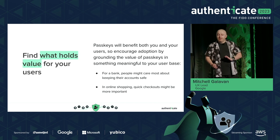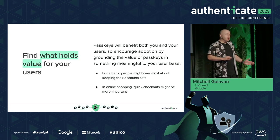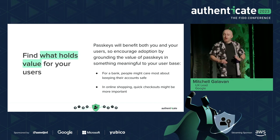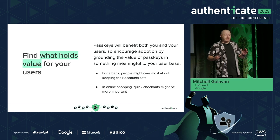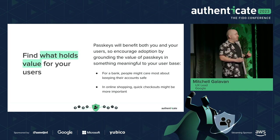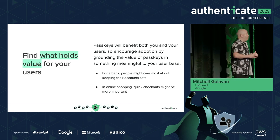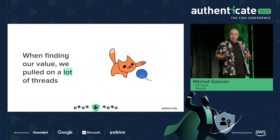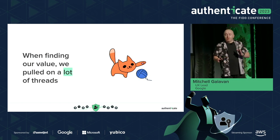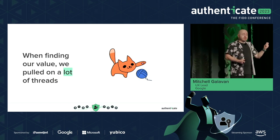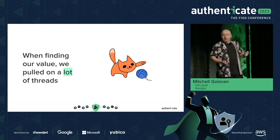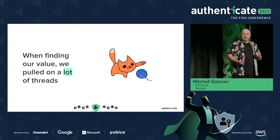Encourage adoption by grounding passkeys in value that resonates with users — something meaningful to your user base. For a bank, people might care most about keeping their accounts safe. In online shopping, quick checkouts might be the most important thing to that particular cohort. At Google, when we were trying to find our value and what resonated with users, we pulled on a lot of threads.